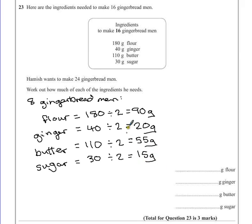So, these quantities will make 8 gingerbread men. We want 24. So now if we triple this new recipe, times all of those numbers by 3, we'll make 24 biscuits.